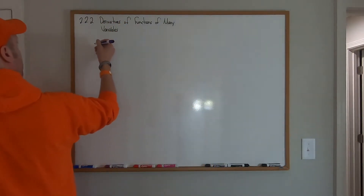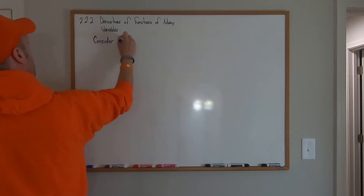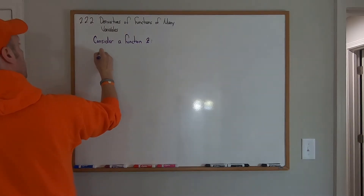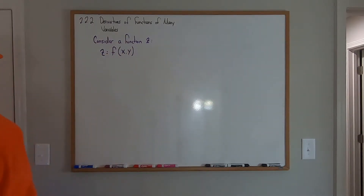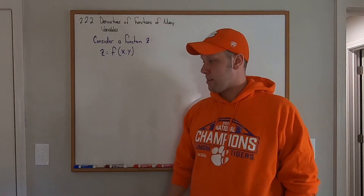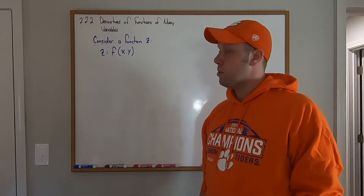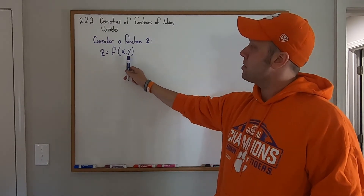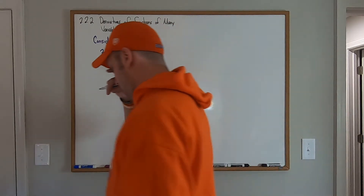We learned how to take a derivative last time. This time we're going to have a function z that is a function of two variables, x and y. What we're going to want to know is how z is changing with an infinitesimal change in x, and also with an infinitesimal change in y. This is where the partial derivative comes in.